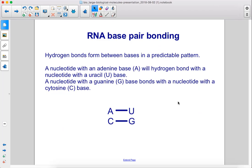Hydrogen bonds form between bases in a predictable pattern. A nucleotide with an adenine base will hydrogen bond with a nucleotide with a uracil base. A nucleotide with a guanine base bonds with a nucleotide with a cytosine base.